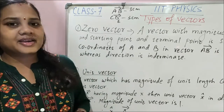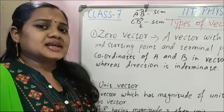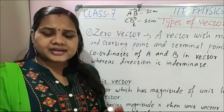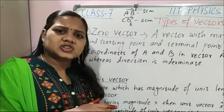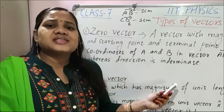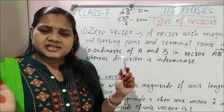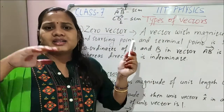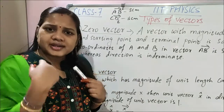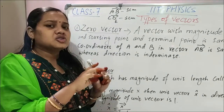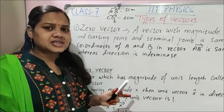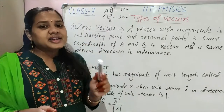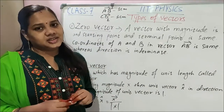Next is negative vectors. Negative vectors means two vectors having same magnitude but opposite in direction. Same magnitude — two centimeters, two centimeters — but one is pointing east, another pointing west, or one is pointing north, another pointing south. So magnitude is same but pointing opposite directions, then they are negative vectors of each other.